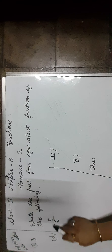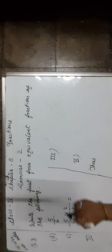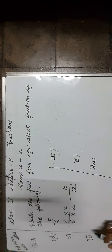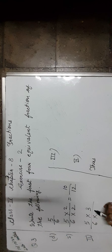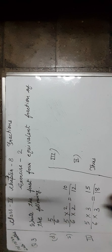Next is 5 upon 6. For the first equivalent fraction, we multiply both numerator and denominator by 2, which is equal to 10 upon 12. For the second equivalent fraction, we multiply both numerator and denominator by 3: 5 threes are 15, 6 threes are 18, giving 15 upon 18.